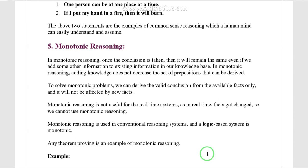For example, if we take one statement and conclude something, and then add another statement, the conclusion should remain the same — that is called monotonic reasoning. For example, Rama is placed in a company called Sintel. From this statement, the conclusion is: Rama placed in Sintel. Then we add another statement: Rani helped Rama to get placed. But the conclusion is still: Rama placed in Sintel company.